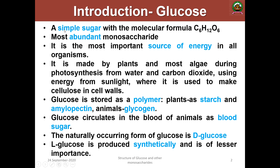Glucose is a simple sugar with the molecular formula C6H12O6 and it is the most abundant monosaccharide found in the universe. It is the most important and primary source of energy in all organisms such as plants, animals, and microorganisms. In the case of plants and some photosynthetic algae, the main process of producing carbohydrate is photosynthesis, from water and carbon dioxide using energy from sunlight, where it is used to make cellulose in the cell walls.